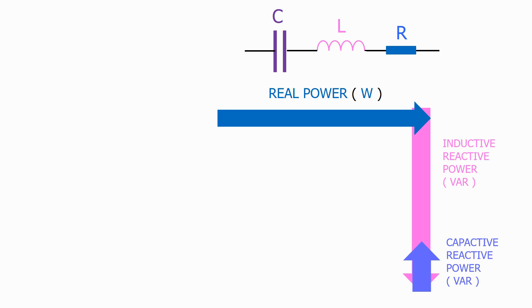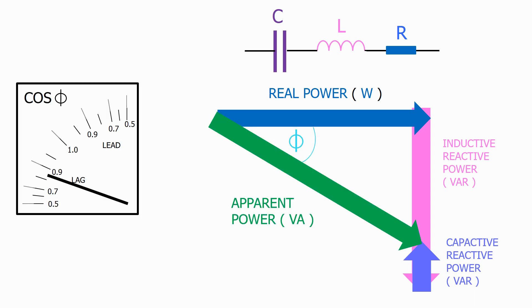Where these two elements meet we have the apparent power, measured in VA. Phi is the angle between the real power and the apparent power.